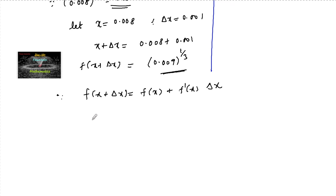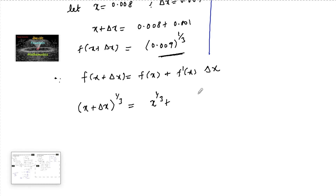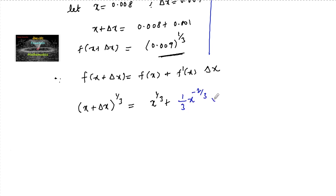So we have (x + δx)^(1/3) = x^(1/3) + f'(x) · δx, where f'(x) = (1/3) x^(-2/3). Therefore (x + δx)^(1/3) = x^(1/3) + (1/3) x^(-2/3) · δx.